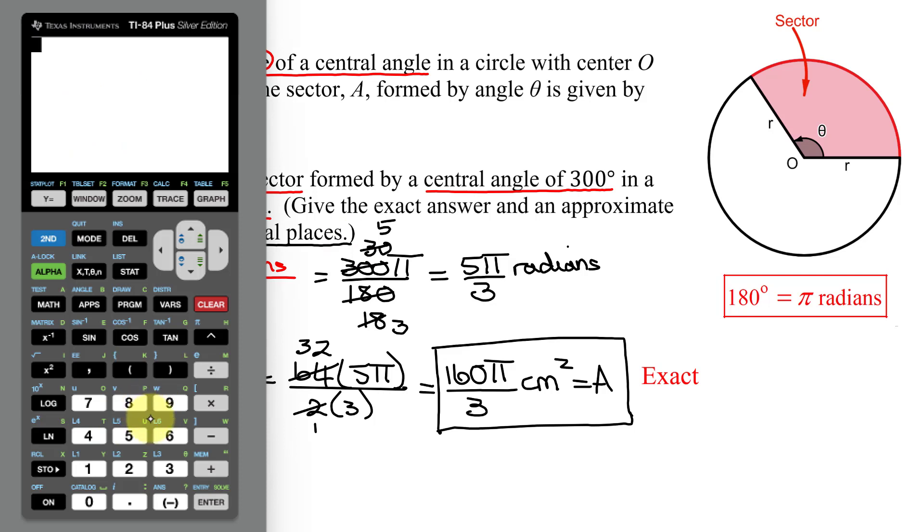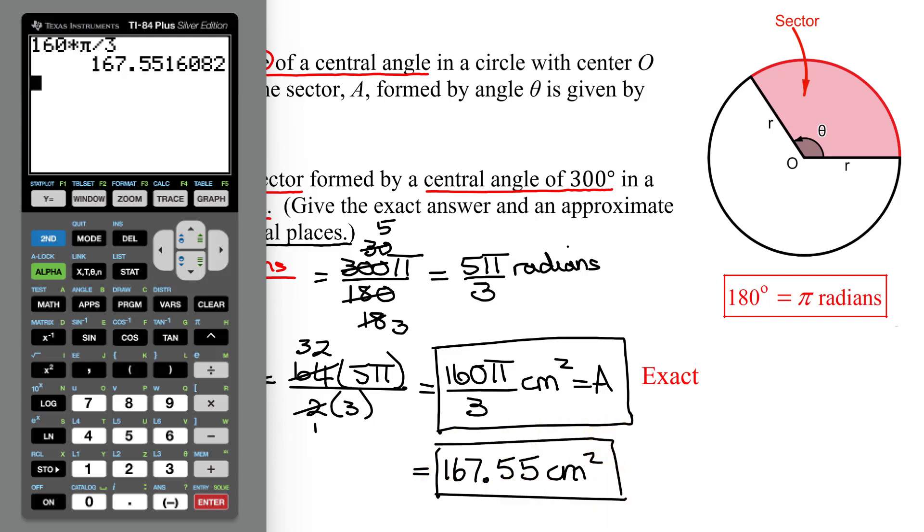So here is my calculator. I need to put this expression into it. So it's 160 times pi. I need the accurate version of pi that's in blue. So it's second carat, then divided by 3. Hit enter. I need to round it to two decimal places. That's this 5. The 1 is not going to round that up. So my answer is 167.55 square centimeters. And that is the approximate solution to this problem.